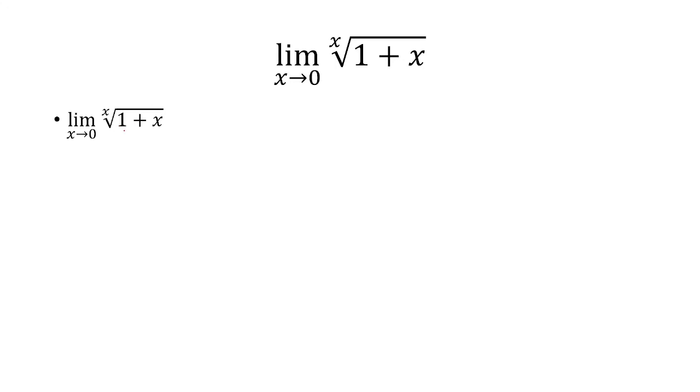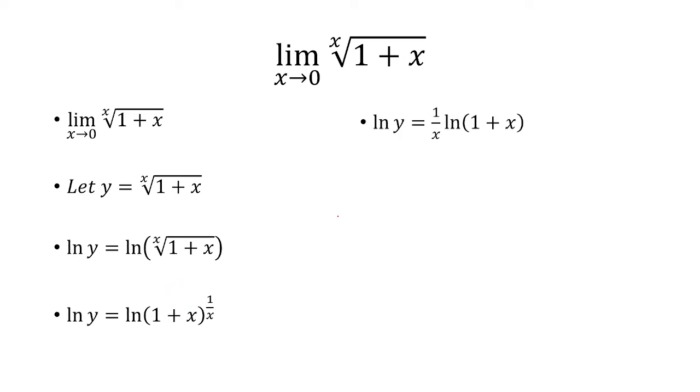Now, I'm just going to let y equal the x-th root of 1 plus x. So the natural log of y will be the natural log of the right side, which I can rewrite as ln of 1 plus x raised to the 1 over x power. And so the x, when it comes out in front,